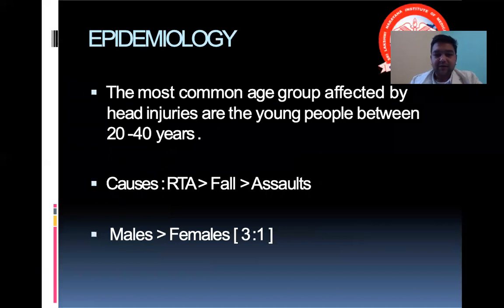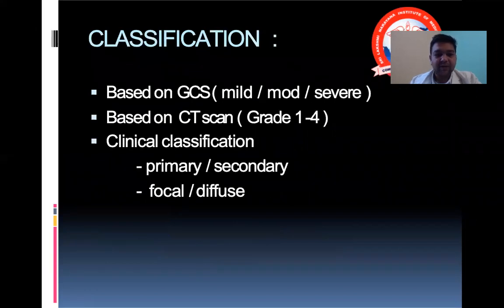The most commonly affected group is young people and the causes are RTA followed by fall followed by assaults. Males are more likely, around a 3 to 1 ratio between males to females. The classification of head injury can be done on multiple bases.